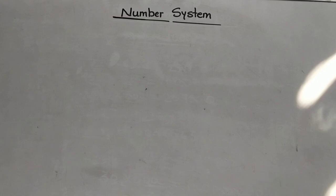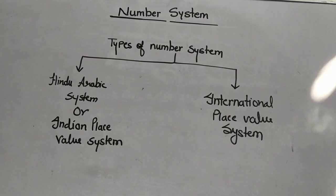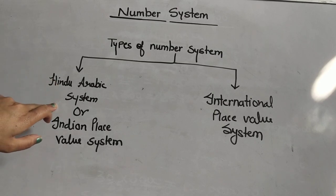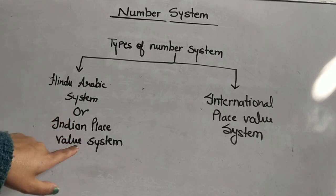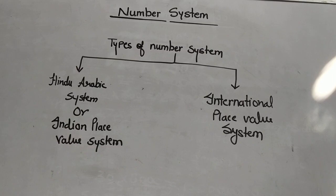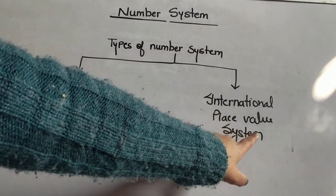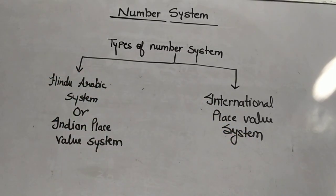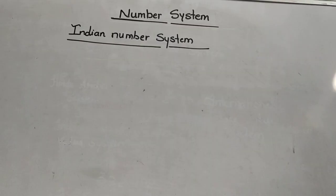Hello students, let us discuss a new topic: number system. There are two types of number systems. First, the Hindu Arabic system or Indian place value system, and second, the international place value system or international number system.